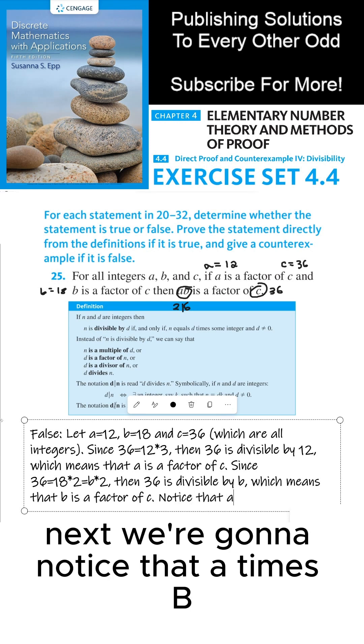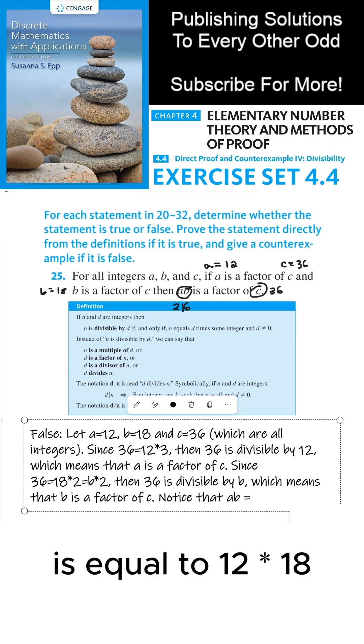Next, we're going to notice that a times b is equal to 12 times 18, which is 216.